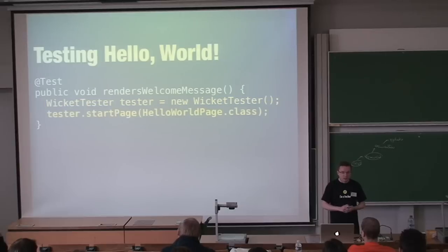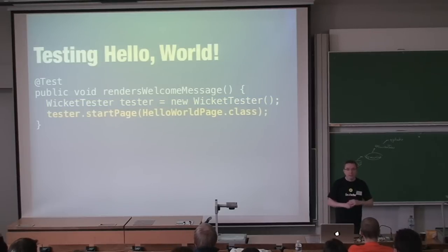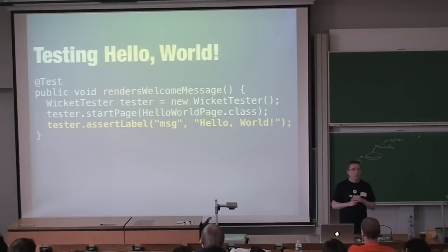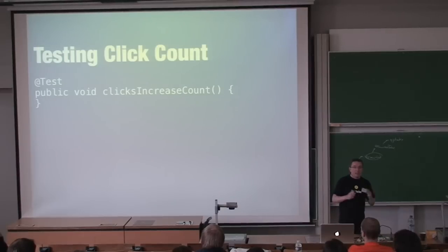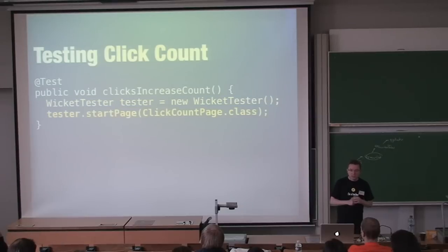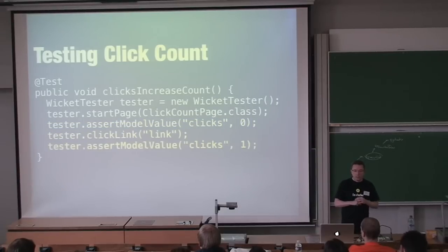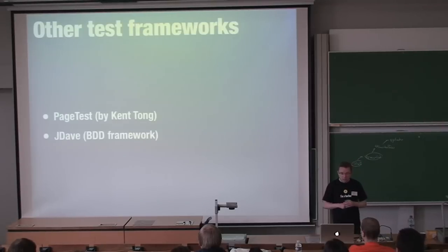Testing Hello World: create a test method, instantiate WicketTester, tell the tester to start with the HelloWorld page, and assert that the displayed text contains 'Hello World.' That gives 100% code coverage for the Hello World page. For the click count test: instantiate the tester, start the counting page, assert the model value of the label is zero, click the link, and assert the model value is one.